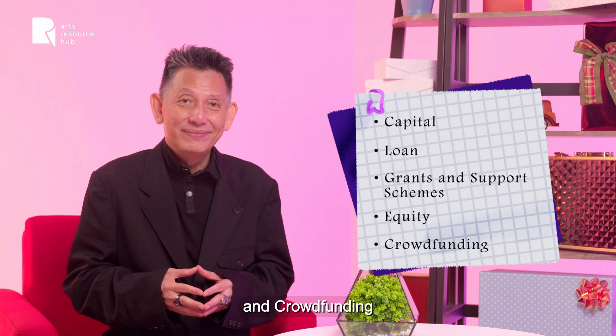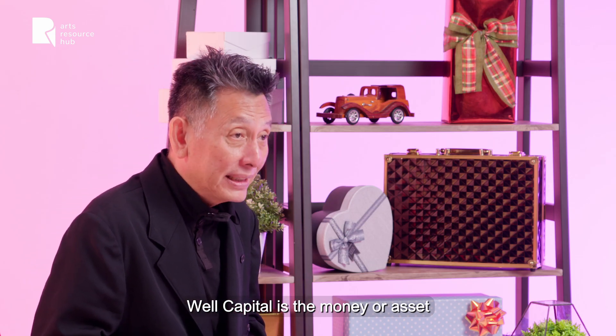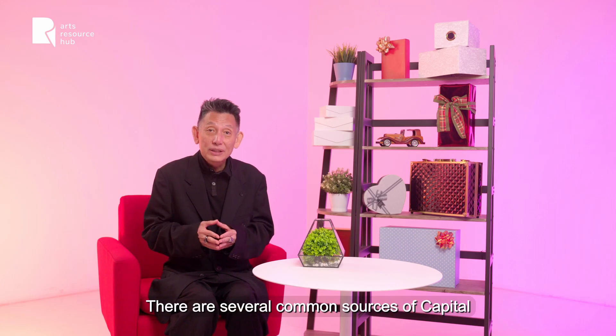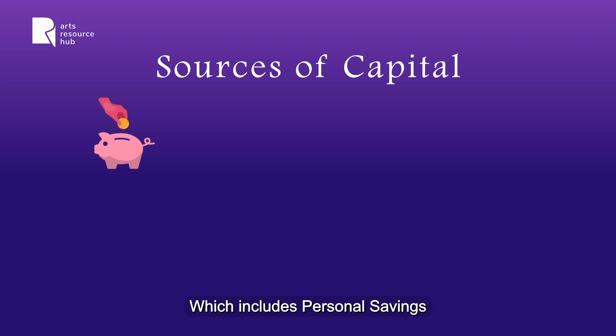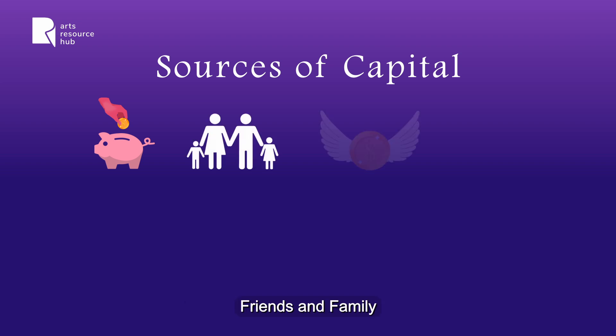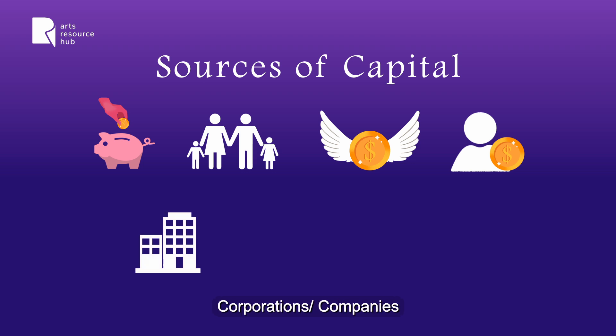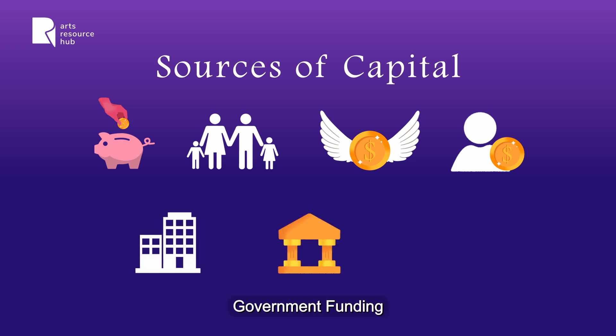Capital, loan, grants and support schemes, equity, and crowdfunding. Capital is the money or asset that is available for the purpose of setting up your company. There are several common sources of capital, which include personal savings, friends and family, angel investors, venture capitalists, corporations or companies, and government funding or private loans.